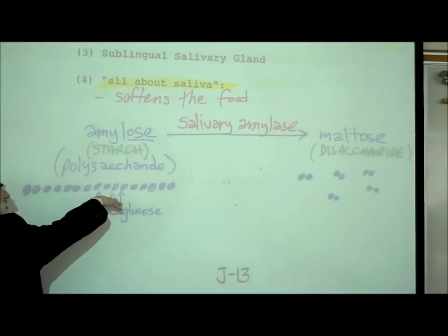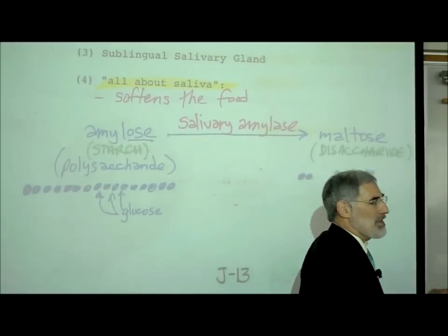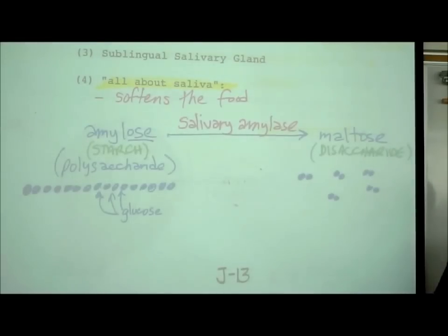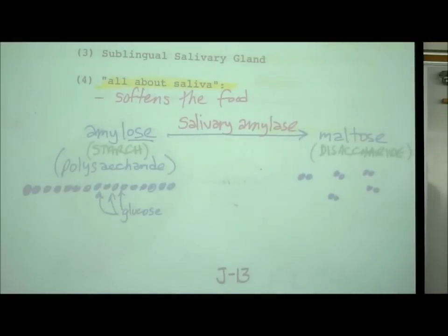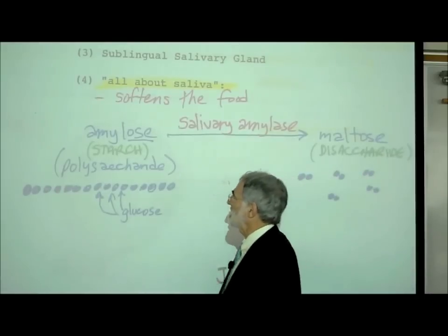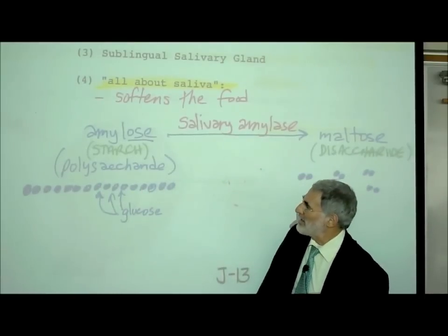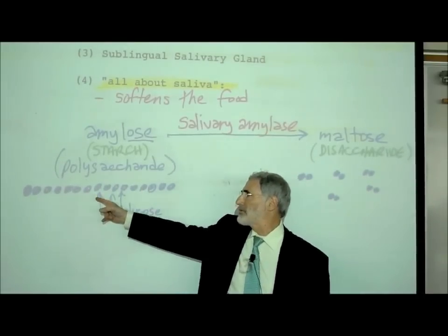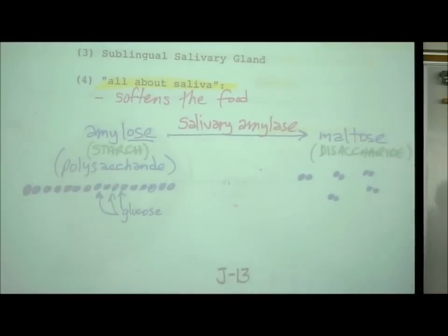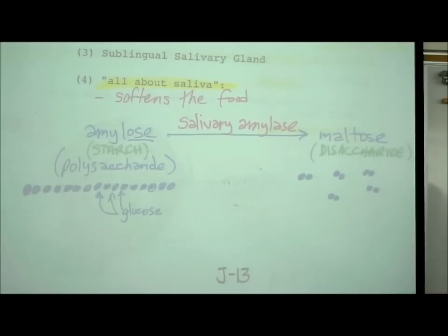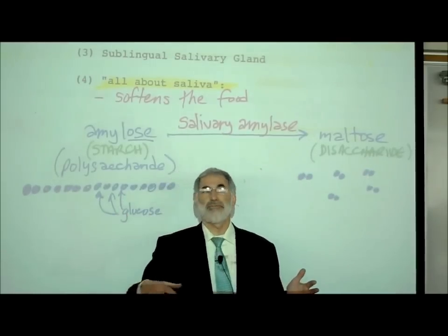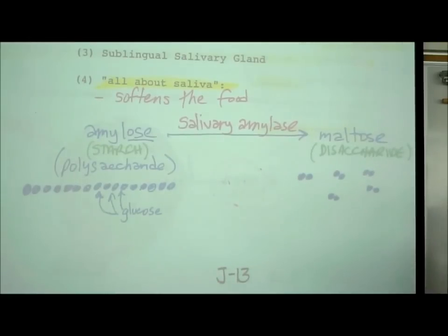There are also enzymes in saliva. One enzyme is salivary amylase. Enzymes are named with the suffix '-ase.' Salivary amylase begins the process of digesting amylose — a polysaccharide, essentially about 100 glucose molecules joined together. Amylose is the technical name for what we commonly call starch.